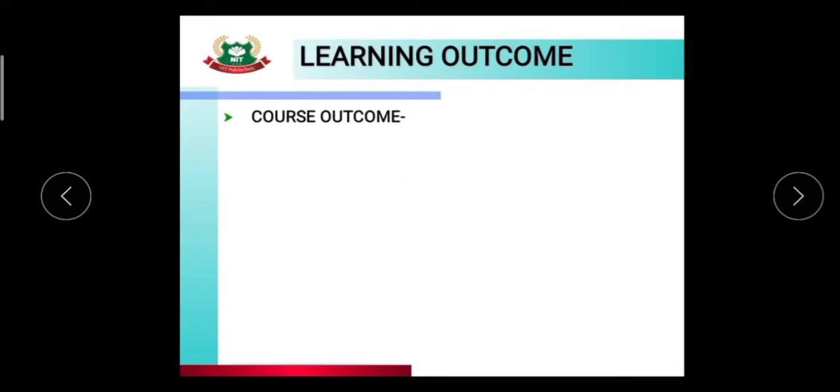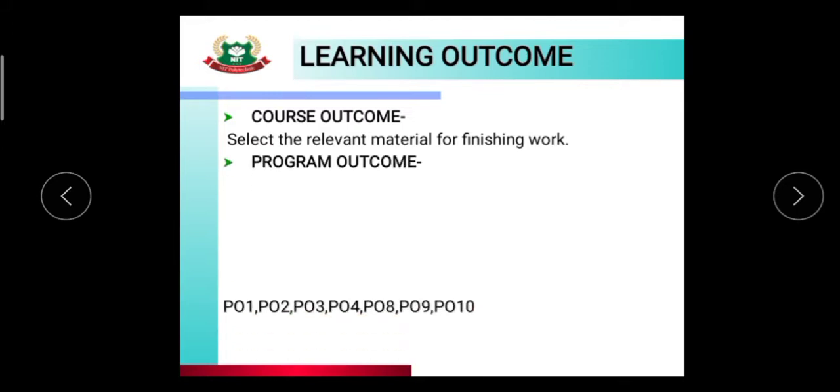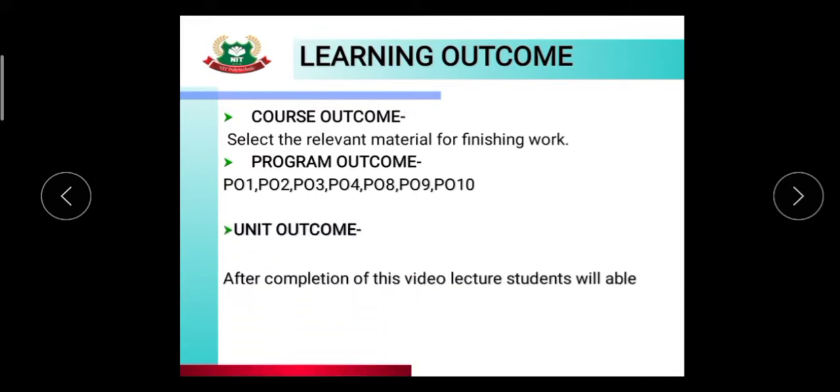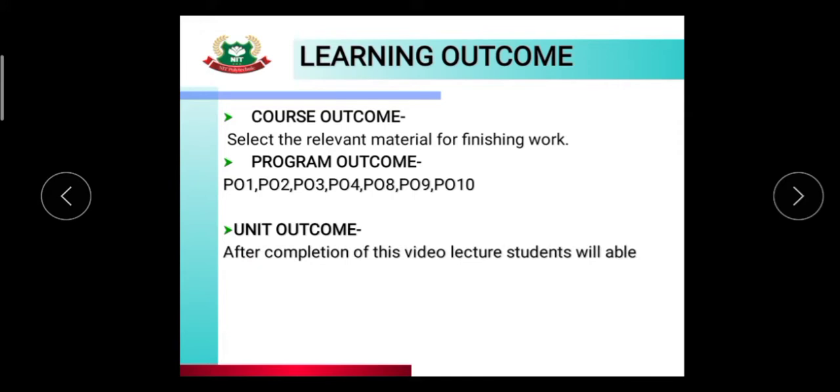Now the learning outcome: first course outcome - select the relevant material for finishing work. Program outcomes: PO1, PO2, PO3, PO4, PO8, PO9, and PO10. Unit outcome: after completion of this video lecture, students will be able to choose the roofing material for the given type of building with justification.